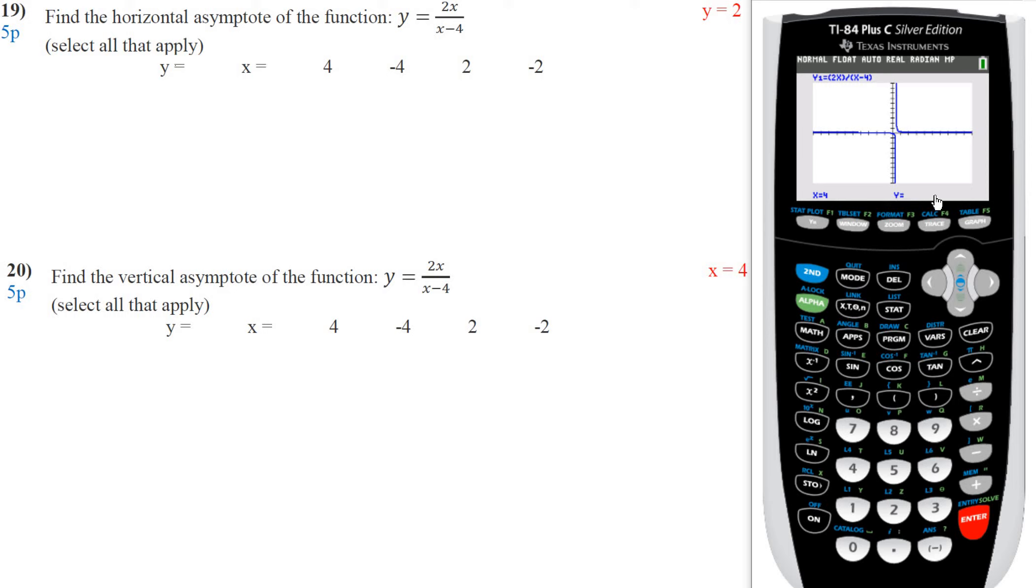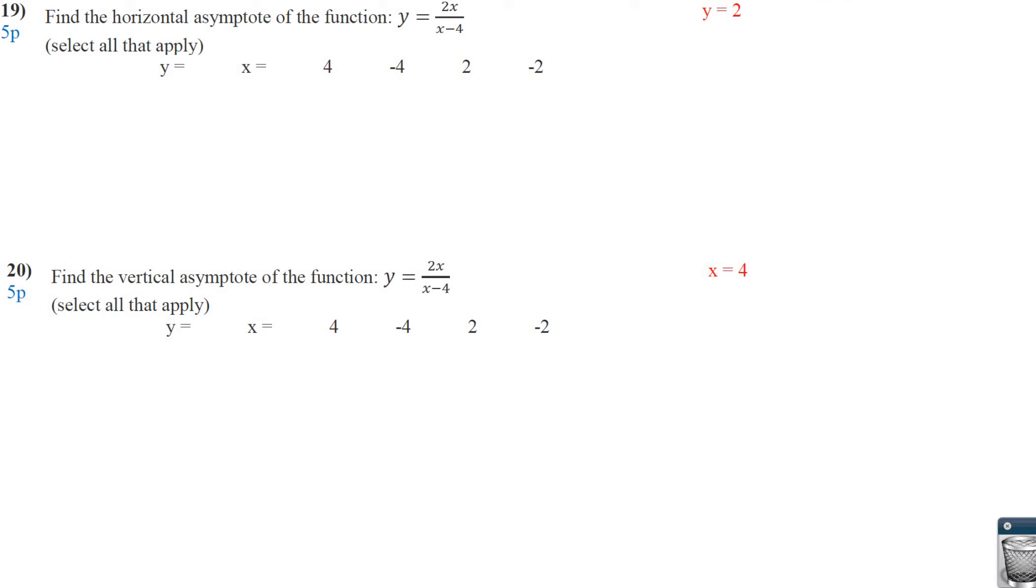Well, I get no y value. Why is that? Oh, yeah. I have a restriction, right, where x minus 4 can't be 0. So x can't be 0. There's a vertical line there. So I want to pay attention to little tricks and stuff like that.